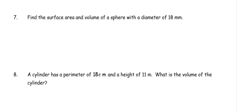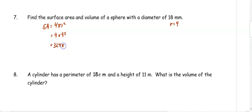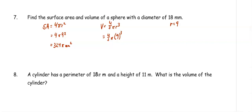And volume of a sphere with a diameter of 18 millimeters. If the diameter is 18, the radius is 9. Surface area is 4 pi r squared, so we have 4 pi times 9 squared, and that gets us 324 pi millimeters squared. The volume is 4 thirds pi r cubed, and that's going to get us 972 pi millimeters cubed.